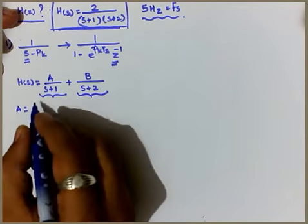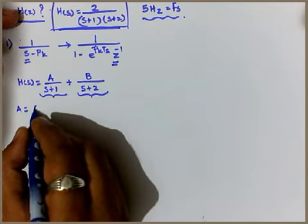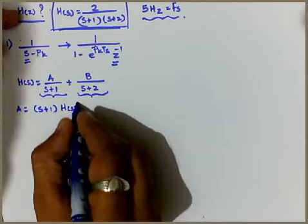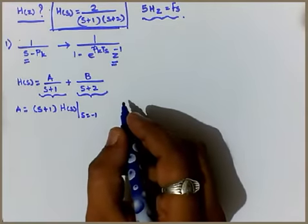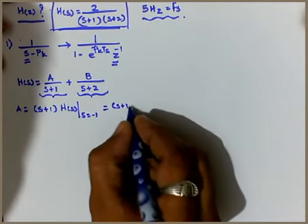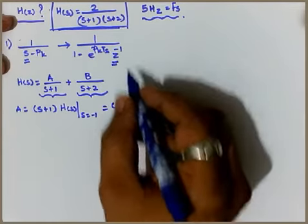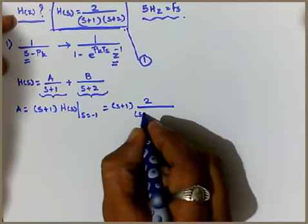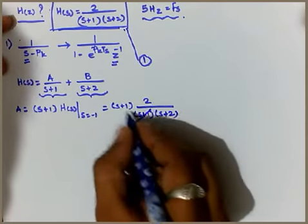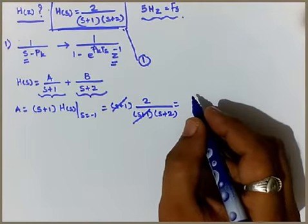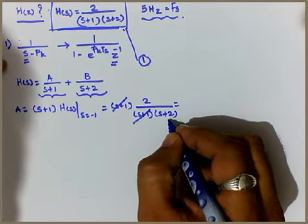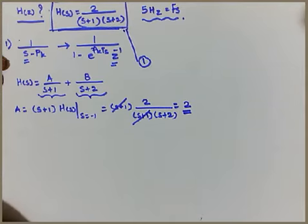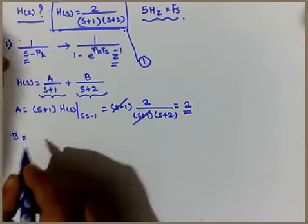The value of A can be obtained by multiplying (s+1)·H(s) and evaluating at s = −1. So (s+1) · [2/((s+1)(s+2))] = 2/(s+2). At s = −1, this gives 2/(−1+2) = 2/1 = 2. So A = 2.